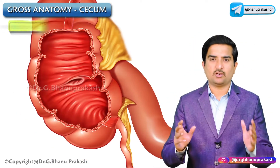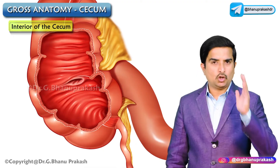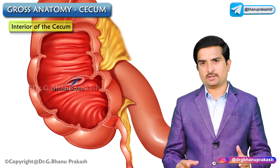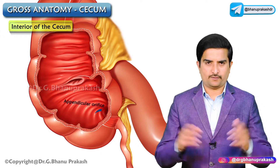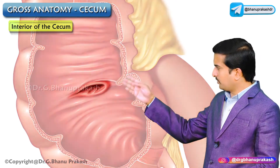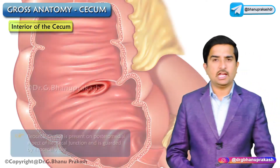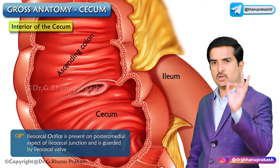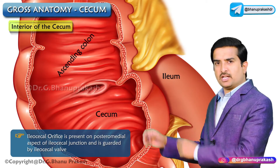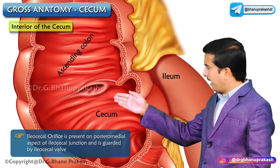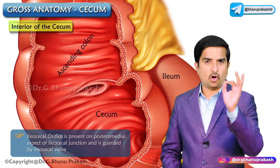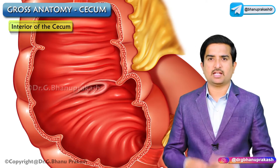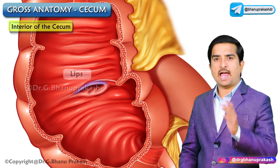The interior of the cecum has two orifices: the ileocecal orifice and the appendicular orifice. The ileocecal orifice is present on the posteromedial aspect of the ileocecal junction, where the ileum opens into the large intestine. It is guarded by the ileocecal valve and measures about 2.5 centimeters transversely.